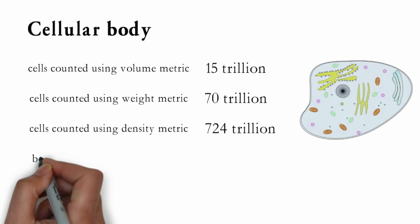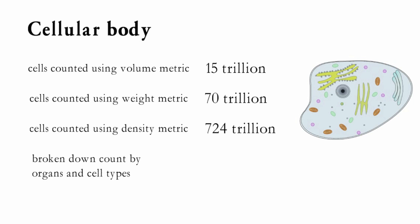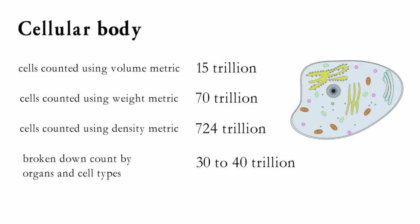But recently scientists have broken down the count by organs and cell types. This has led them to come up with detail volume and densities of cells according to different body parts, such as heart muscle cells or fat cells. This has made them come up with a new number. An average human body of weight 70 kilograms consists of about 30 to 40 trillion cells, most of which are red blood cells.